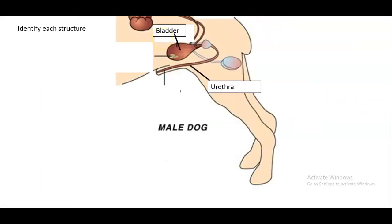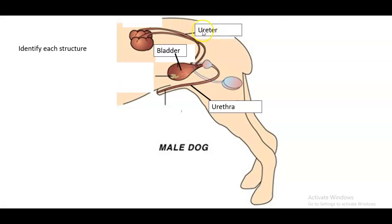And here we have ureter, of course, bringing urine from the kidneys down to the bladder. We have the bladder itself. And then we have the urethra. And of course, this is a male dog. You can tell because the urethra is that backward C shape.